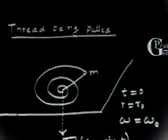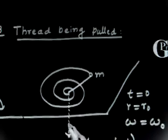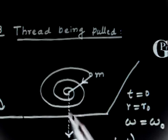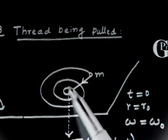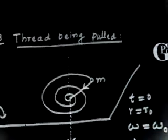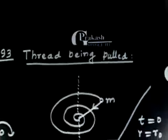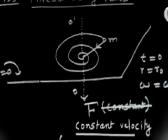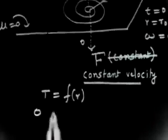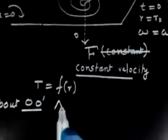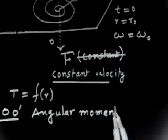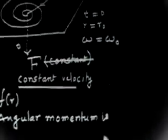What is conserved in this case? Angular momentum is conserved if we consider the axis passing through the hole — let us call this axis OO'. The tension in the thread passes through this point, and the pulling force also passes through this point. So about axis OO', angular momentum is conserved because all forces pass through OO'.